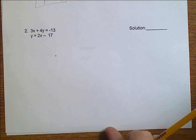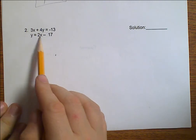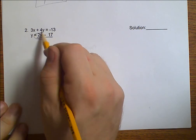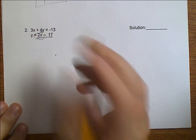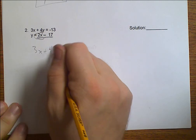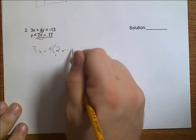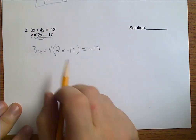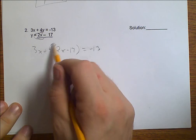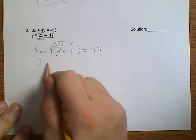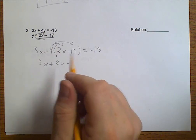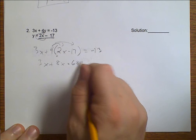Let's go ahead and try this again. This time, we know what Y is. We know that Y is 2X minus 17. So, I'm going to plug that back into Y. 3X plus 4 times 2X minus 17 equals negative 13. Again, we're going to start off with distribution. 3X plus 8X minus 17 times 4 is 68 equals negative 13.